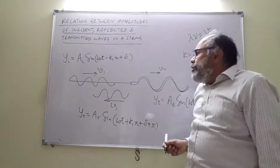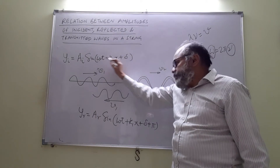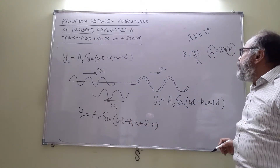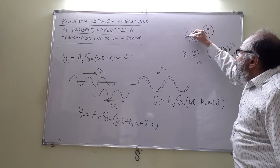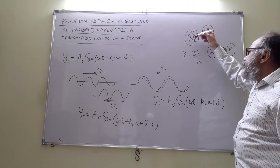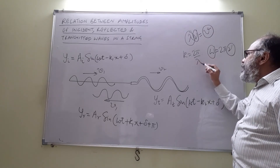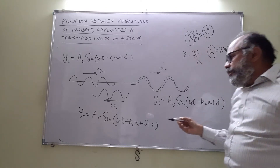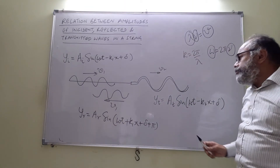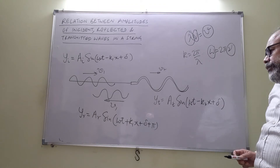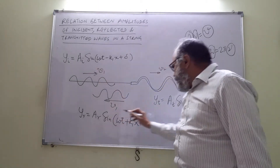Since the frequency ν is the same but the speed is changing, the wavelength λ will change — if the speed is more, λ is more; if the speed is less, λ is less. So k = 2π/λ will be different. That is why we use k1 for the rarer medium and k2 for the denser medium. Our objective is to find a relation between Ai, Ar, and At.